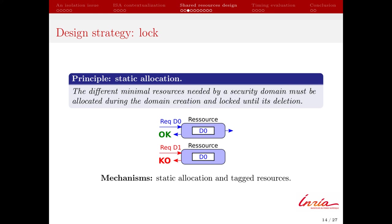The first strategy, lock, allows a DOM to allocate the resources it needs during its creation until its deletion, preventing dynamic sharing that leads to leakage between DOMs. Two mechanisms are used: static allocation and tagging. During DOM creation, hardware allocates resources and tags them to indicate ownership. At any point in time and space, the hardware knows if sharing through a resource is possible. For example, only requests from DOM D0 are acknowledged; the resource is not available for D1 and simply does not exist for it.